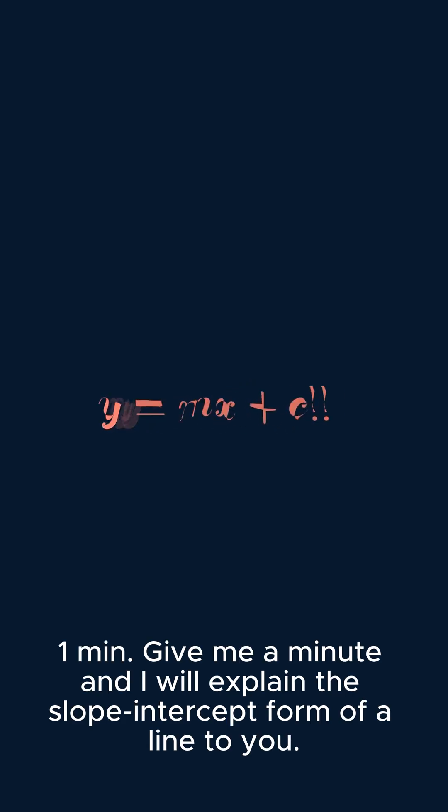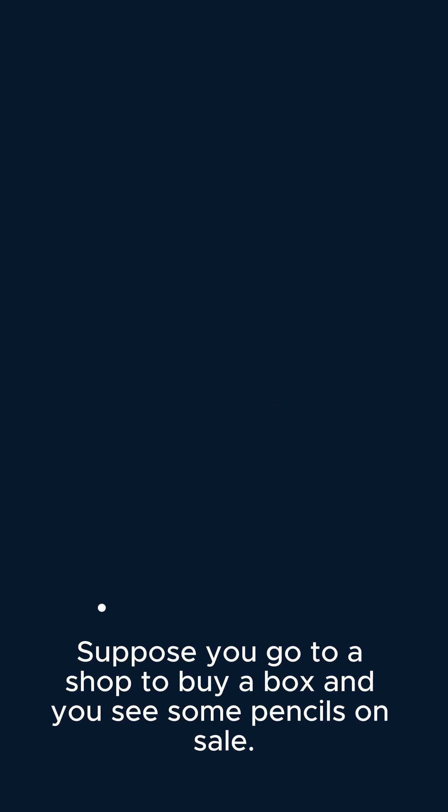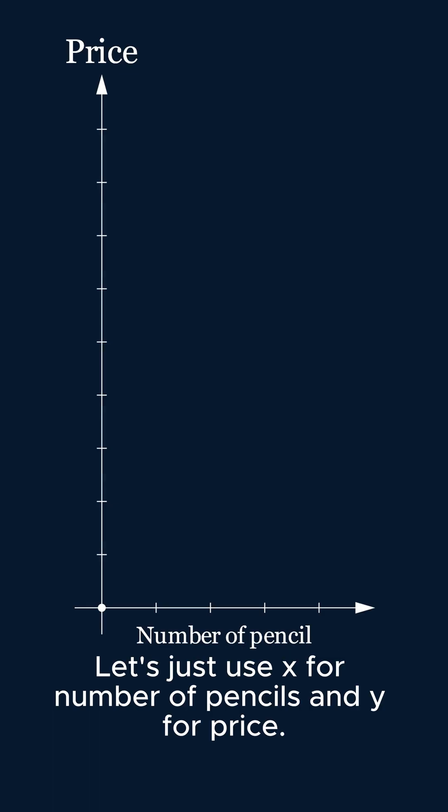One minute - give me a minute and I will explain the slope-intercept form of a line to you. Suppose you go to a shop to buy a box and you see some pencils on sale. Let's use x for number of pencils and y for the total price.